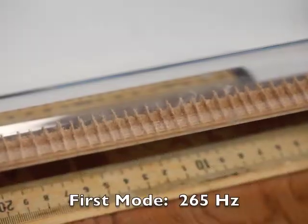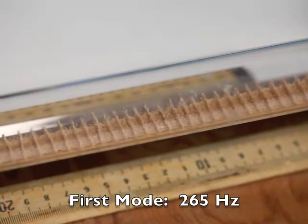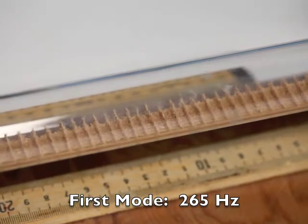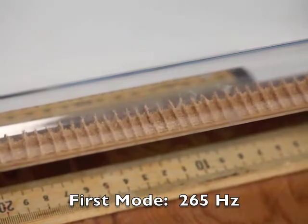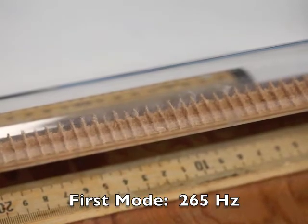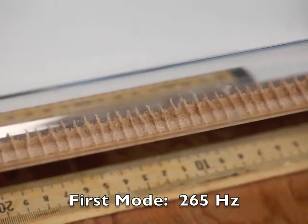So this is the first mode at 265 Hz. I'm to the right of the center of the tube where there's a maximum amount of cork dust agitation. So that's a velocity anti-node or a pressure node.